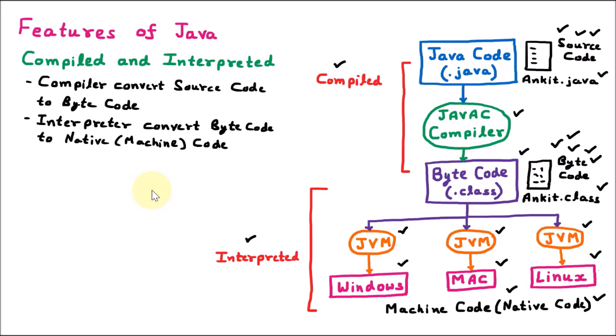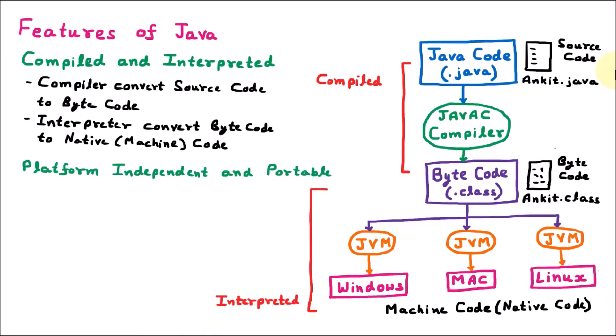The next feature of Java is that it is platform independent and portable. In Java, the source code is converted to byte code, and this byte code is converted to machine code depending upon the machine — it can work on Windows, Mac, or Linux, meaning on any platform. That's why it is platform independent.